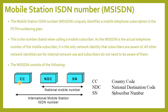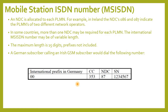The MSISDN consists of: CC — Country Code, NDC — National Destination Code, and SN — Subscriber Number. An NDC is allocated to each PLMN. For example, in Ireland the NDCs 086 and 087 indicate the PLMNs of different network operators. In some countries, more than one NDC may be required for each PLMN. The International MSISDN number may be of variable length, with a maximum length of 15 digits, and the prefix is not included.